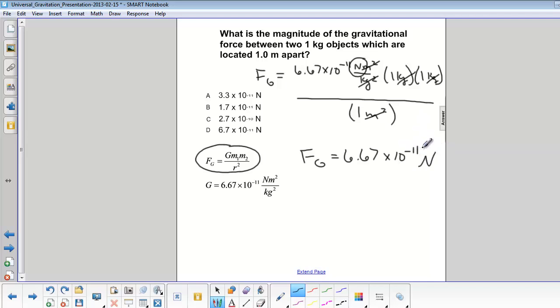So look at this 10 to the negative 11th. What that means is that we've got a number like this. We've got 1, 2, 3, 4, 5, 6, 7, 8, 9, 10, 11 spaces. That's a very small force.